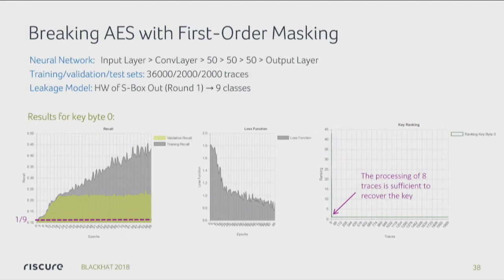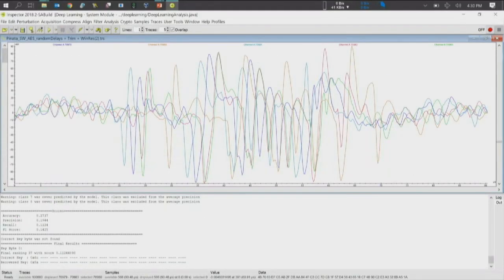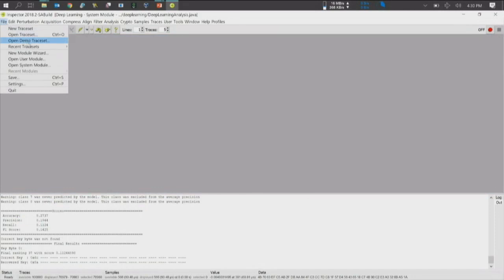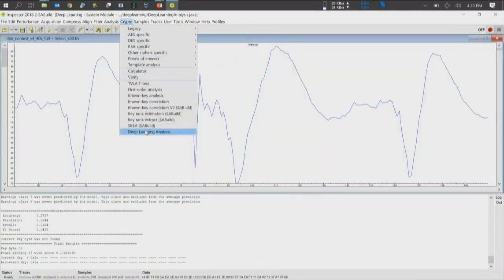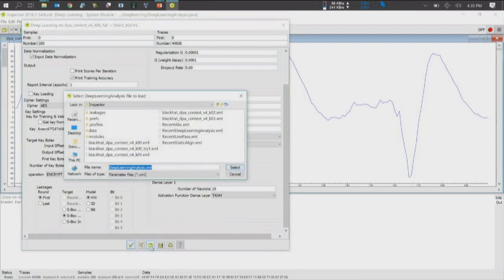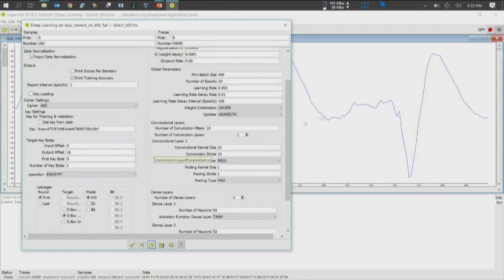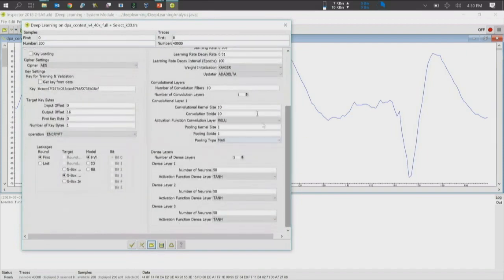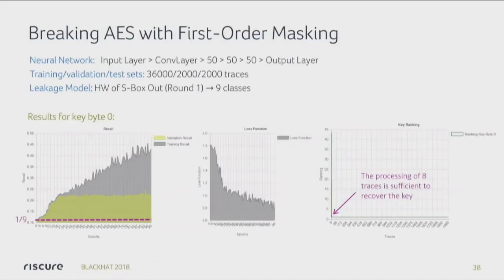Going into the results — let's open the DPA contest and run deep learning. This time I will use the correct network — a convolutional neural network with only one convolutional layer and three dense layers. I'm going to let my poor CPU run for a little while. If my sacrifices to the demo gods have paid off, we'll see that we recover the key in extremely few traces. In fact, eight traces was sufficient to get the full key out.